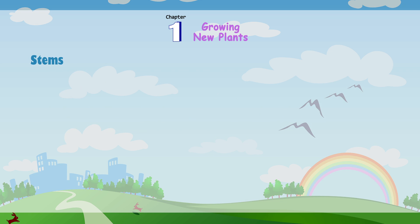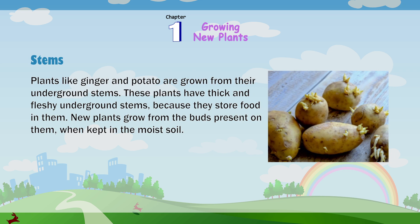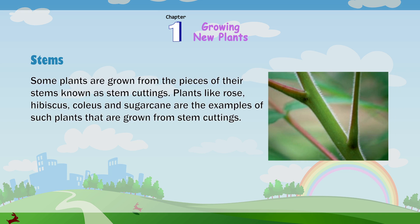Stems: Plants like ginger and potato are grown from their underground stems. These plants have thick and fleshy underground stems because they store food in them. New plants grow from the buds present on them when kept in moist soil. Some plants are grown from pieces of their stems known as stem cuttings. Plants like rose, hibiscus, coleus and sugarcane are examples of plants grown from stem cuttings.